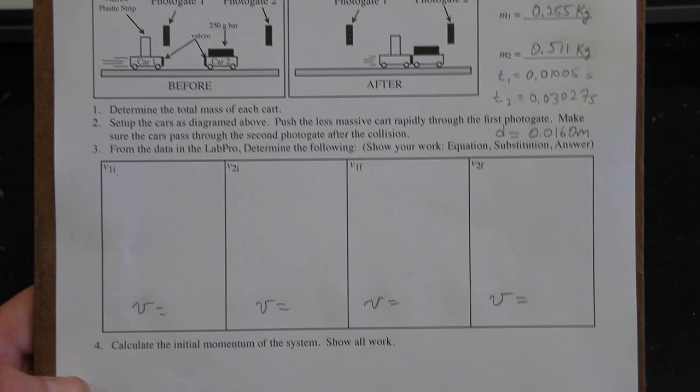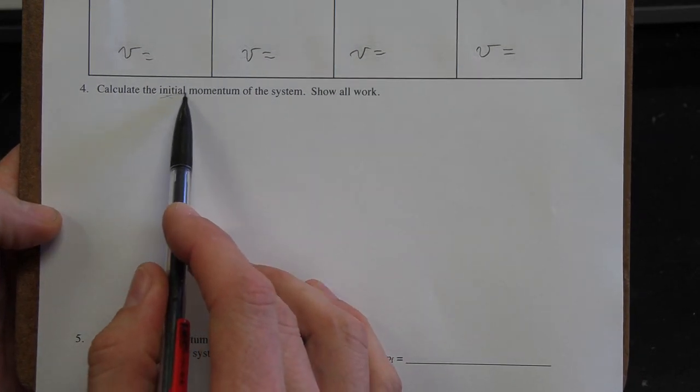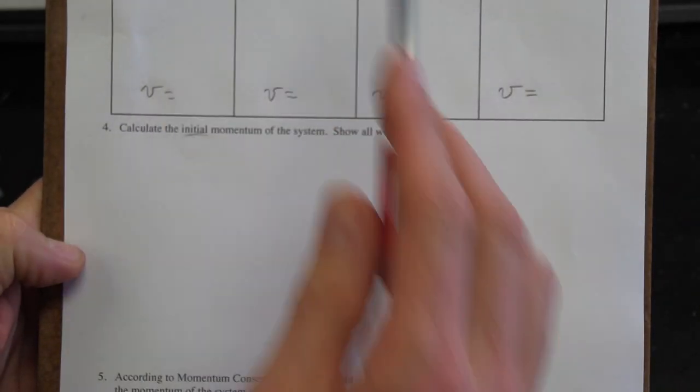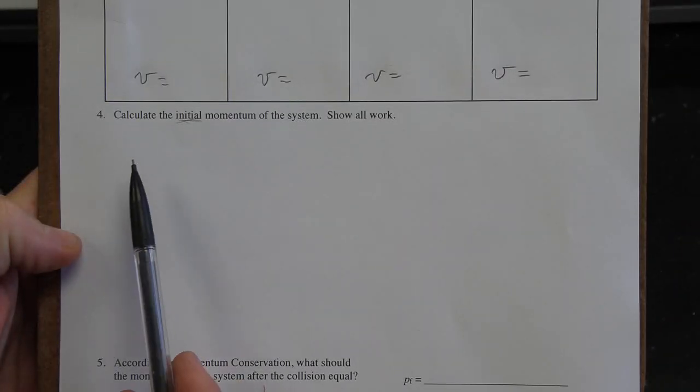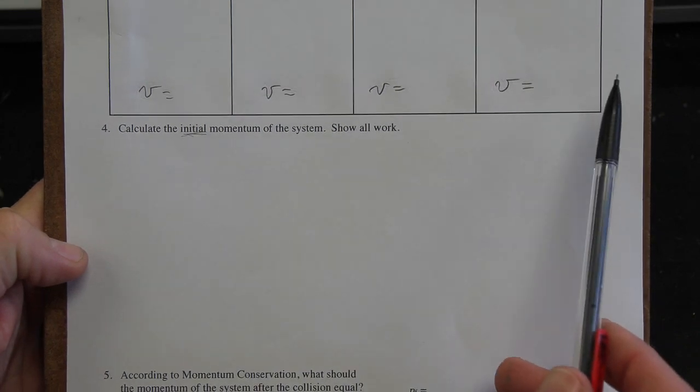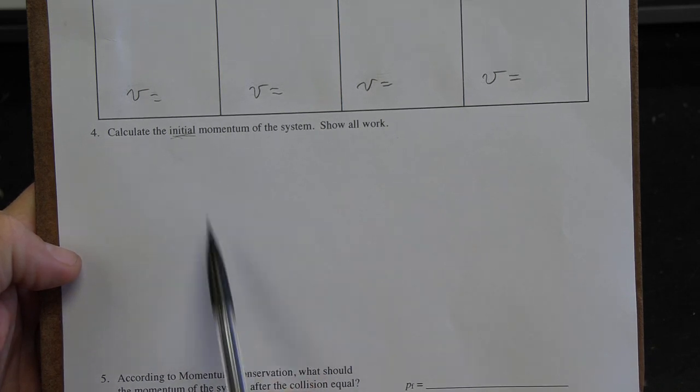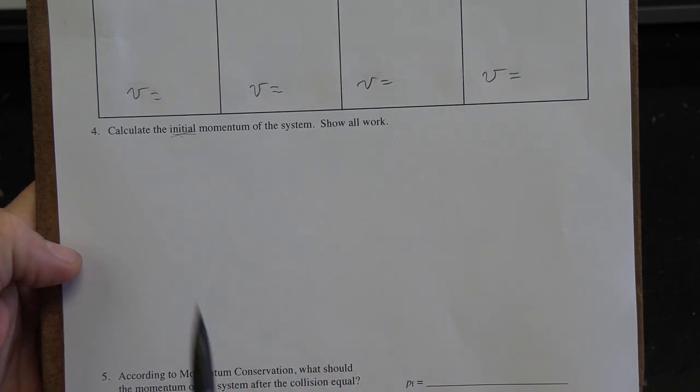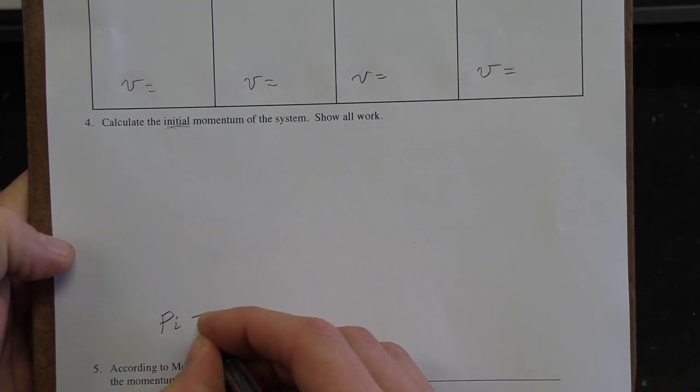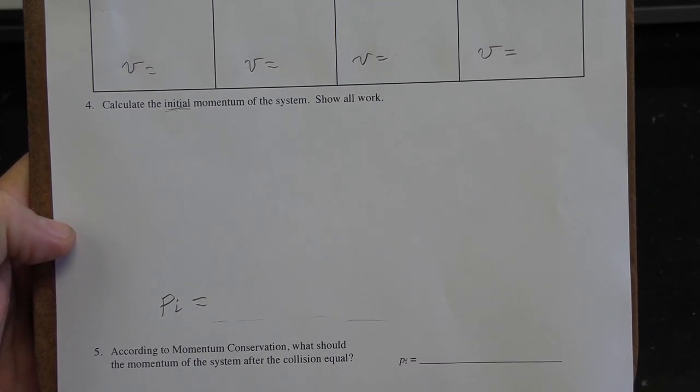Alright. The next thing that you have to do is you have to calculate the momentum of the system initial, that means before the impact occurred. So again, the system is both cars. But before impact, you've got to write out your formula and your calculations with all the appropriate numbers. Some of these velocities in this calculation, some or both masses in the calculation. And when you're all done, you should have P initial equals some number with the appropriate units. So go ahead and do that now.